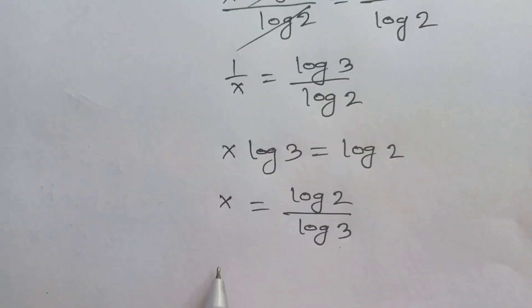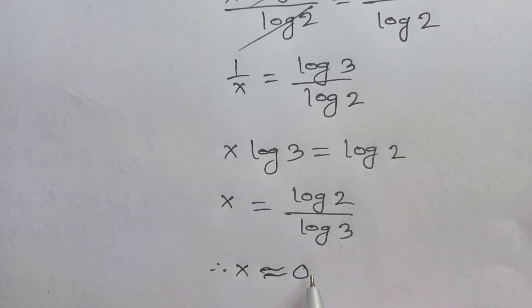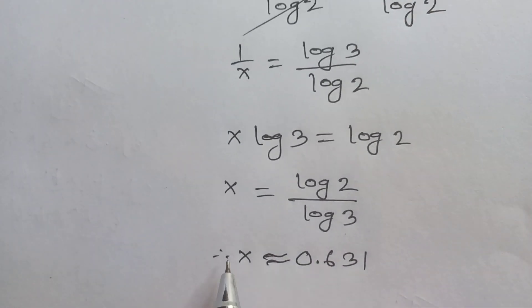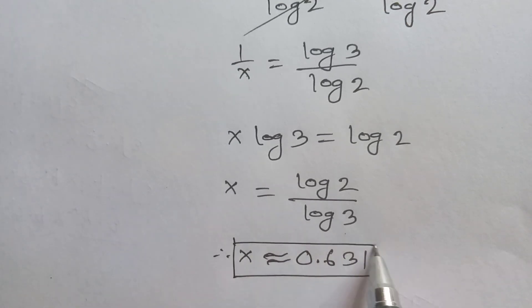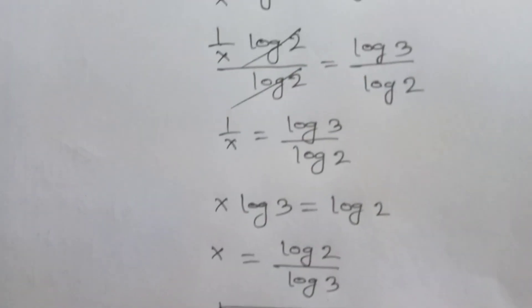The final answer: therefore x is equal to log of 2 over log of 3, approximately it will be 0.63. And this is the final answer of this equation. Thanks for watching, please subscribe to my channel for more videos.